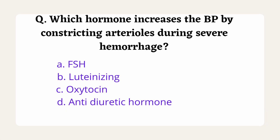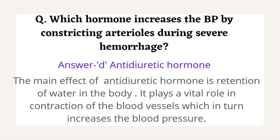The next question is: which hormone increases blood pressure by constricting arterioles during severe hemorrhage? This question was asked in RRB Steno Exam 2019. Options are follicle-stimulating hormone, luteinizing hormone, oxytocin, and antidiuretic hormone. The correct answer is option D, antidiuretic hormone. The main effect of antidiuretic hormone is retention of water in the body, and it also plays a vital role in contraction of blood vessels, which in turn increases blood pressure.